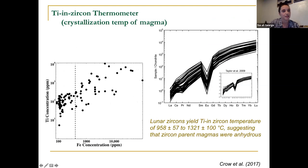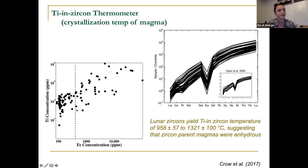Here's an example application of this. They've done this on lunar zircons, and on the left-hand side they've said that anything with greater than 400 ppm of iron is an altered zircon not reflective of the parent melt, based on values for typical Archean zircons on Earth. Assuming the rest reflect parent melt generation, they use the titanium concentration to reconstruct temperature of crystallization. Based on the high temperatures they're getting, as well as the trace and rare earth element patterns they see, they suggest these lunar zircons formed from anhydrous melts — an interesting application to planetary body evolution.